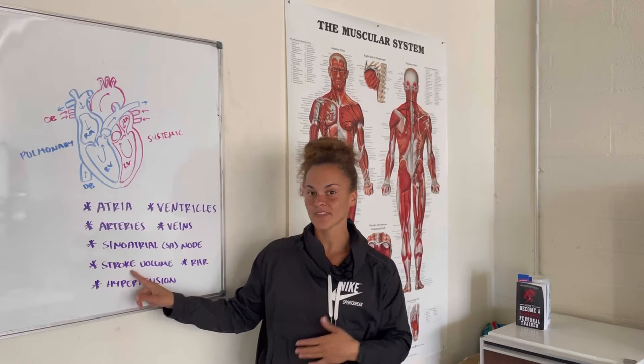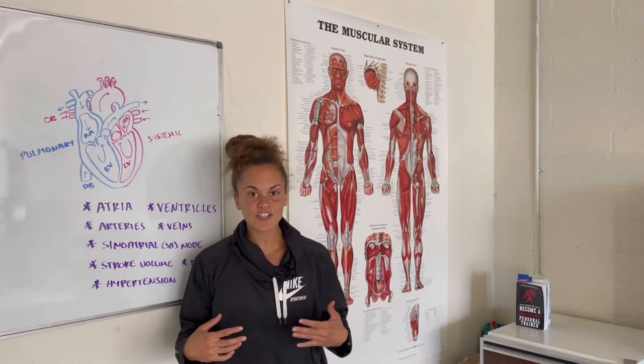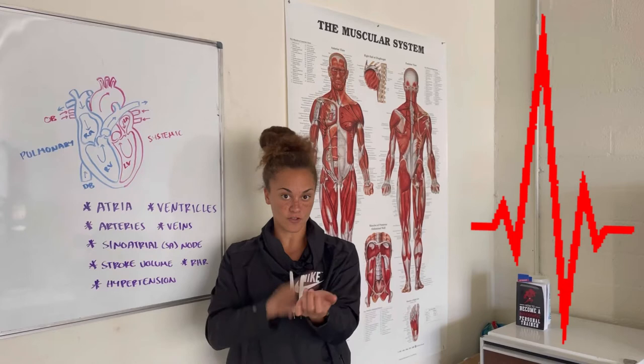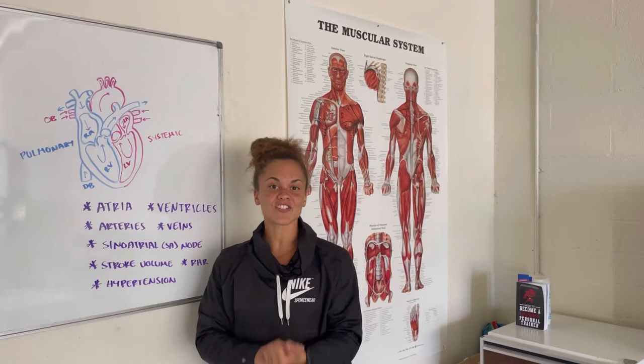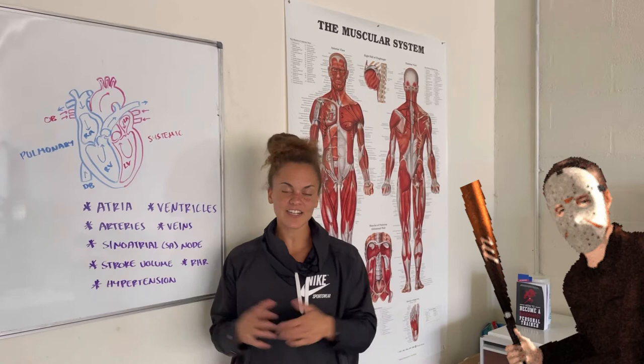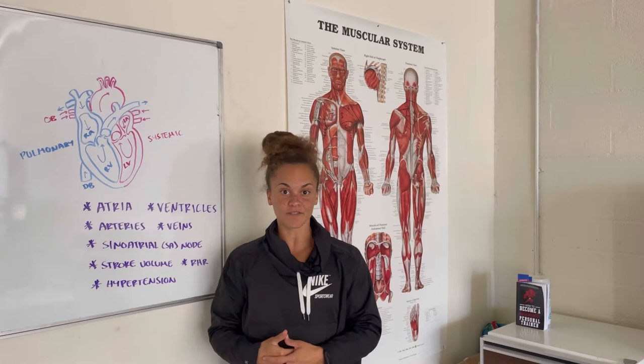Next, we have RHR, which is going to be resting heart rate. As trainers, we're going to check our client's pulse resting heart rate at the wrist — more specifically, the radial pulse, that thumb side. Make sure we're always applying gentle pressure there. And lastly, we have hypertension. The silent killer is going to be high blood pressure, with those numbers being 140 over 90 or greater.